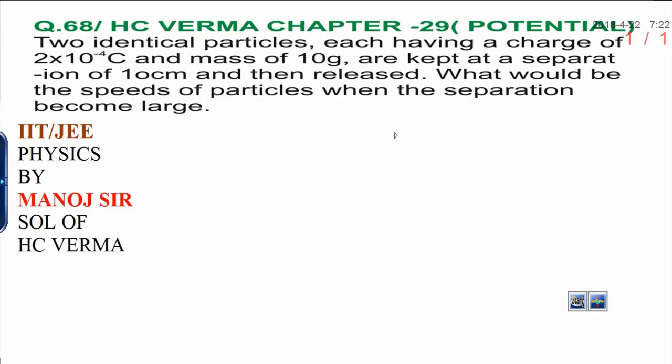You can see here, there are two charges. This one is 2×10⁻⁴ and another is also 2×10⁻⁴ coulomb. Now, they are separated by separation of 10 centimeter and each having the mass also. Mass is 10 gram, 10⁻² kg.